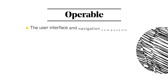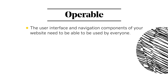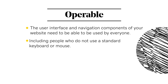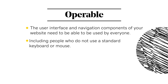Operable means that the user interface and navigation components of your website need to be able to be used by everyone, including people who do not navigate the web using a standard keyboard and mouse. People with motor disabilities, quadriplegia, blindness, or even extreme cases of arthritis cannot use a mouse to click through websites.